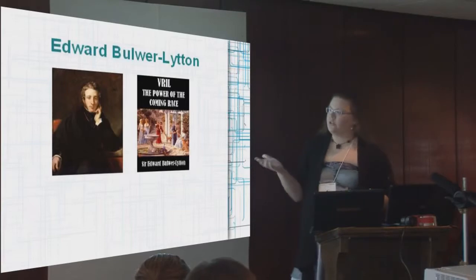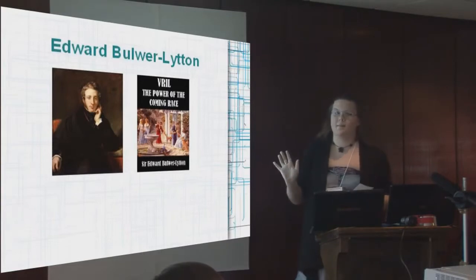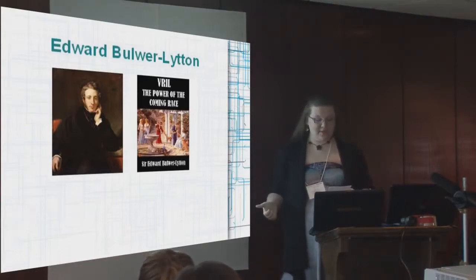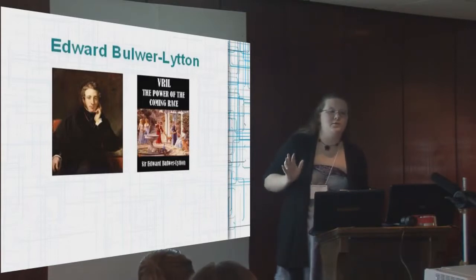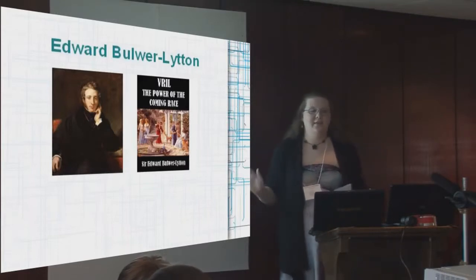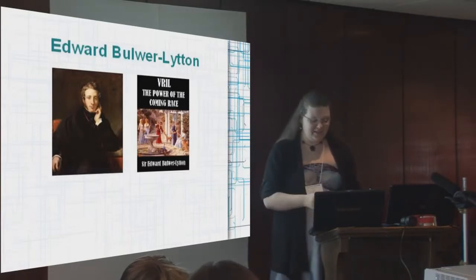He wrote an early example of a science fiction novel. He was quite a popular novelist in his time. And he wrote The Power of the Coming Race, which was later retitled to Vril, The Power of the Coming Race. In the book, Vril was this magic healing elixir, but it could also be used for destruction. So it was basically this superfluid that could do anything. They used it to light their caves and there were magic angel people living underground.